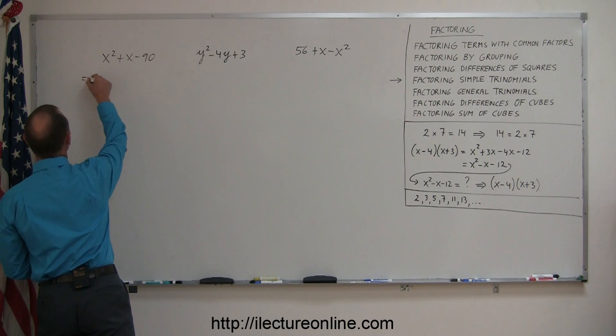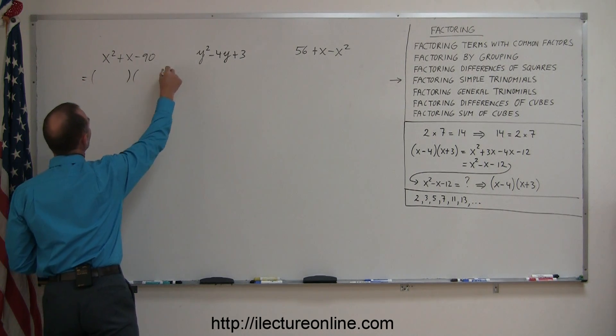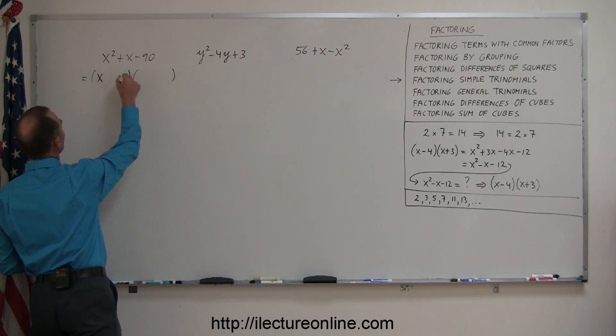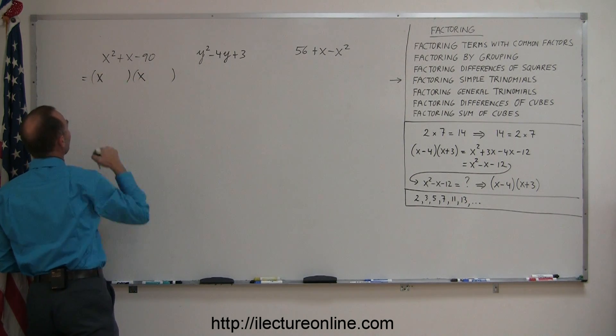Always start with putting down the parentheses. Since it's a simple trinomial with an x squared by itself, you know that you're going to need an x and an x here, because x times x will give you x squared.